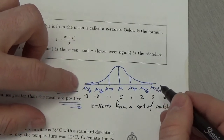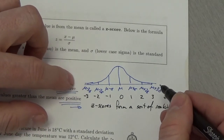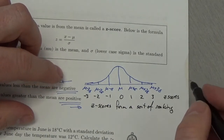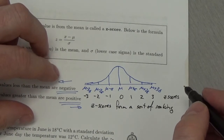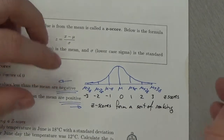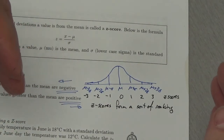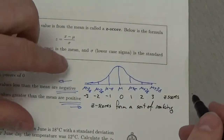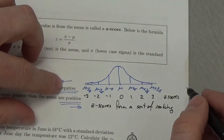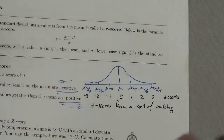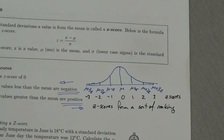You usually expect z-scores to fall between negative 3 and 3. You can get outliers beyond that, and sometimes people extend the range to negative 5 to 5 just to be safe. Let's take a look at some examples to see how these are used.